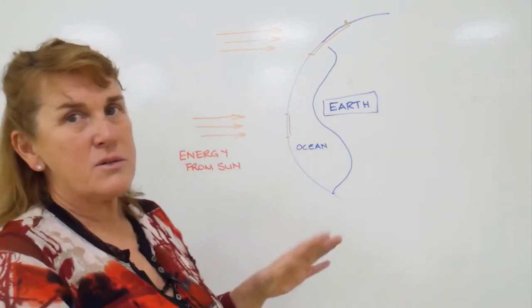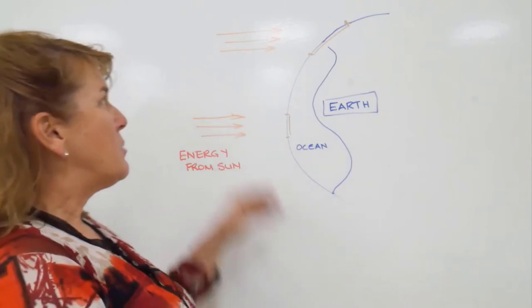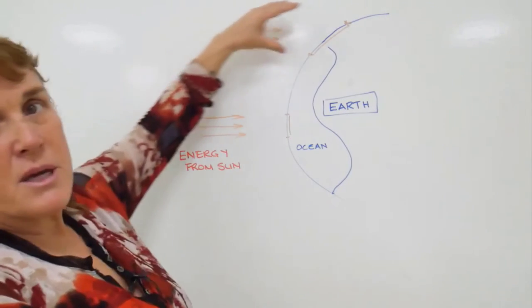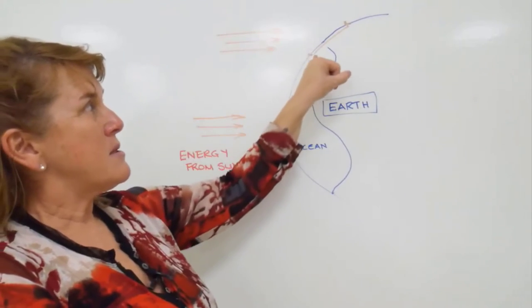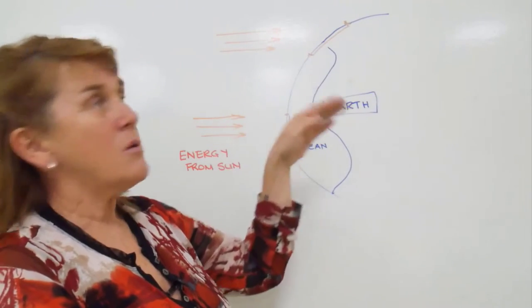that package of energy is concentrated over a small area. But if we think about the same size amount of energy striking up near the poles, what happens is it strikes obliquely—that means on an angle—and